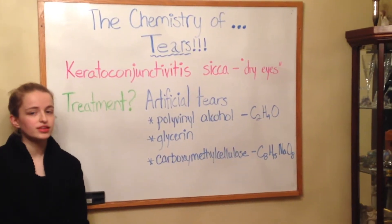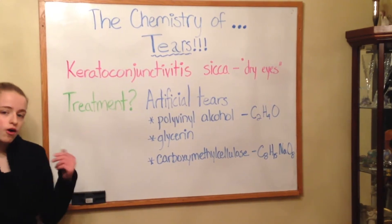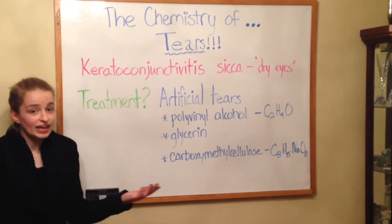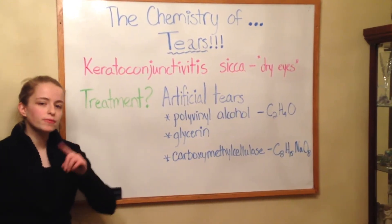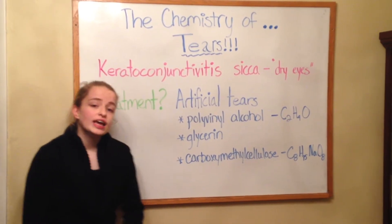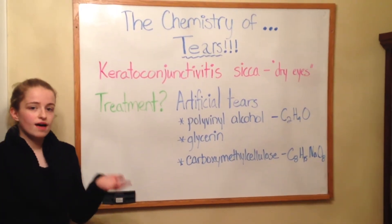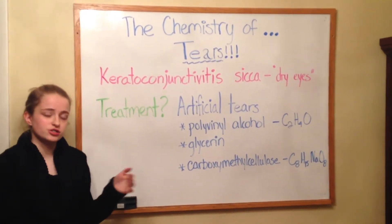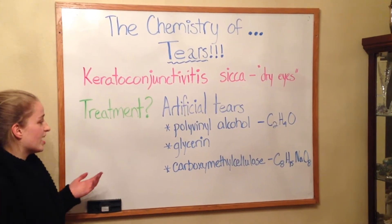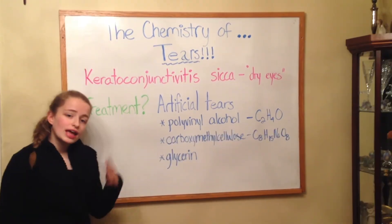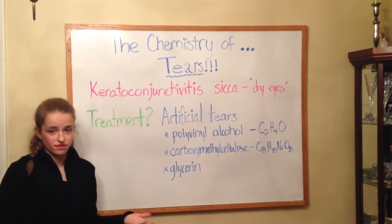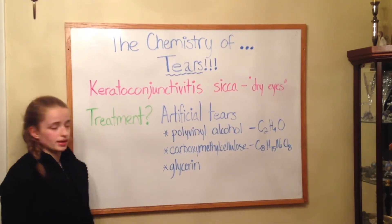You may be asking yourself: what if the eyes, for whatever reason, can't produce tears? There's a condition called keratoconjunctivitis sicca, or dry eyes. In this condition, people have limited tear production, resulting in dryness or irritation of the eyes. A common treatment for dry eyes is artificial tears. While the main components of artificial tears vary based on the brand or type, these are the three main components.